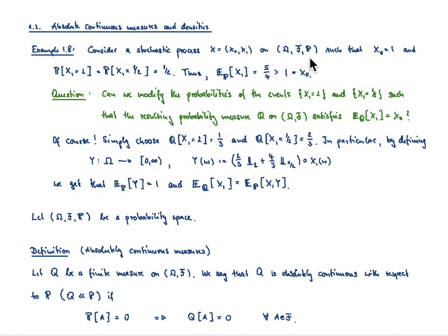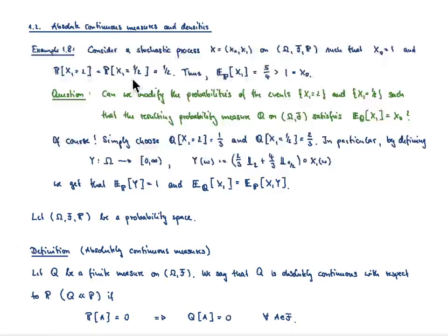I would like to assume that this process starts at time 0 at the value 1. Moreover, I assume that the process at time 1 either jumps to the value 2 with probability 1/2, or jumps to the position 1/2. So clearly, we can compute the expectation of X_1 in that example.